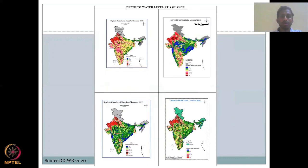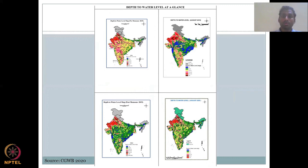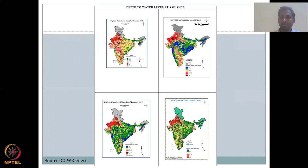The Central Groundwater Board collects data four times a year across seasons: pre-monsoon in May or early June at the peak of summer, during peak monsoon in August, post-monsoon around October after the monsoon stops, and in winter around November–January. Approximately three months apart, they take measurements — giving a good seasonal picture of groundwater dynamics.